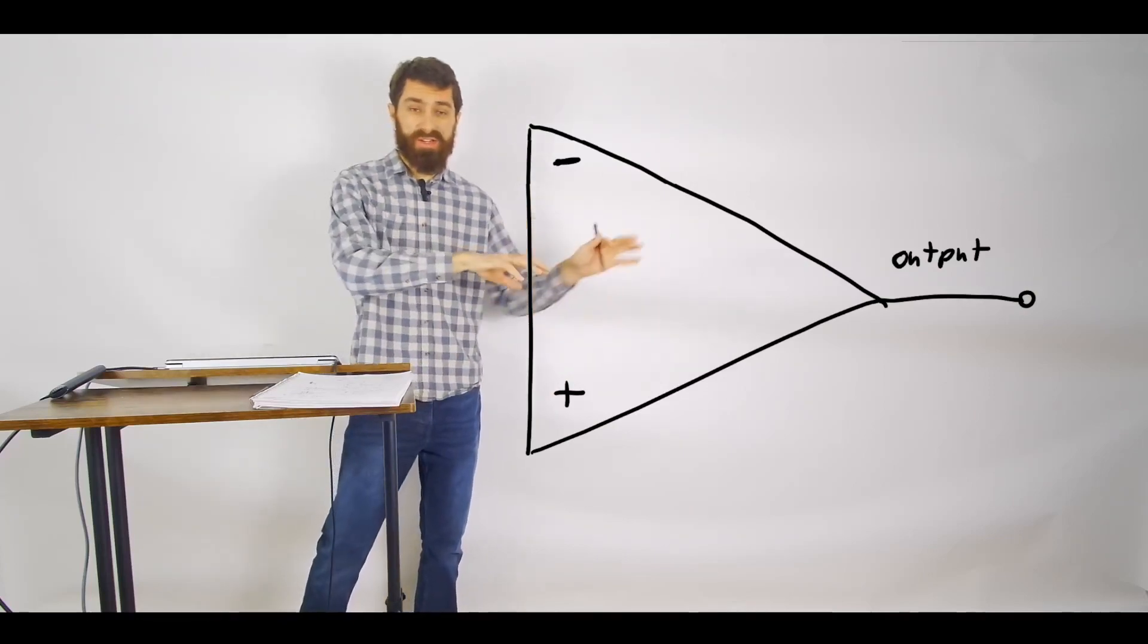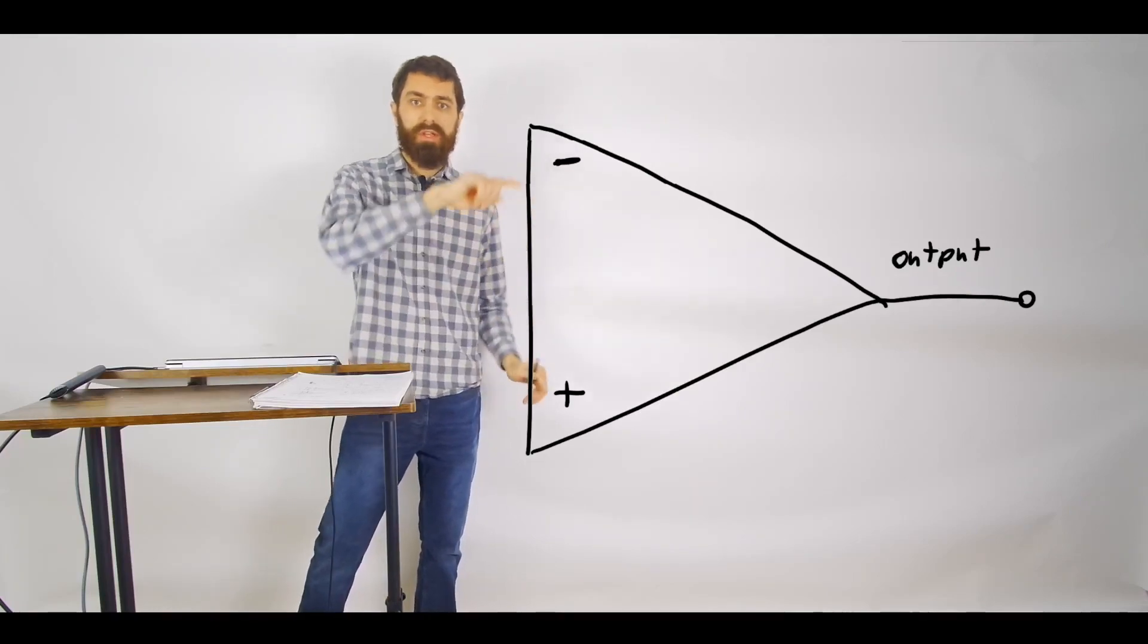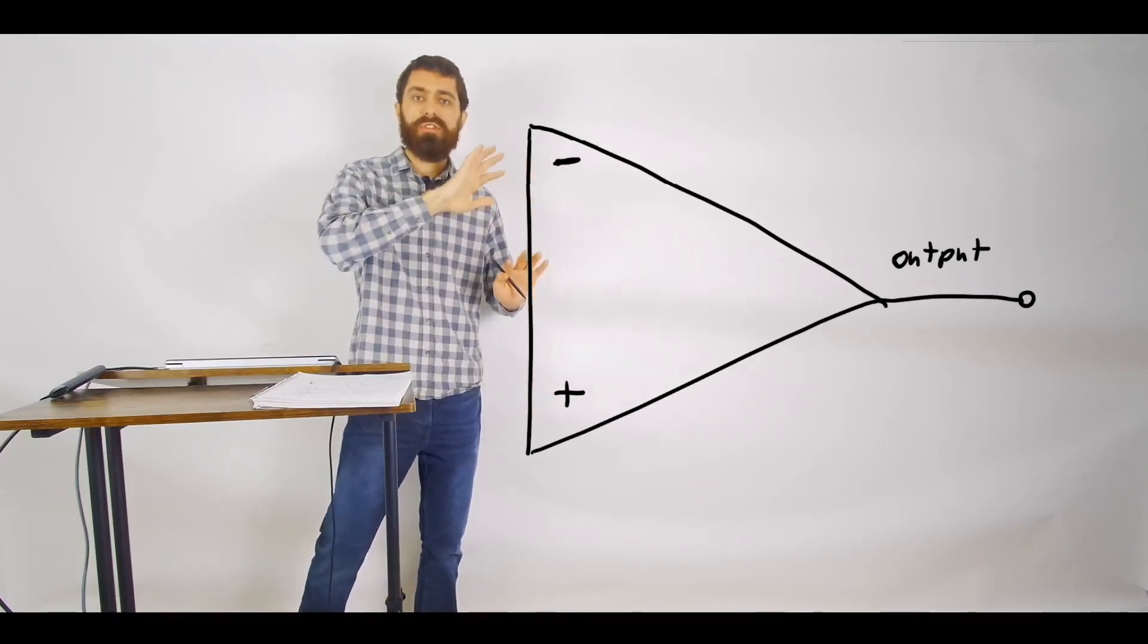The plus and minus signs that go inside with our equivalent circuit, those refer to actual voltages. But these plus and minus signs, these are just labels.